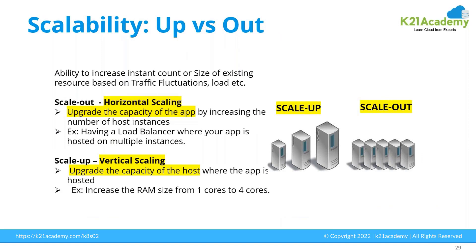In terms of scalability, there are two approaches: scale up and scale out. Scale out is also called horizontal scaling. Horizontal scaling means upgrading the capacity of the app by increasing the number of host instances. For example, if you are running your application on two containers and utilization reaches around 90%, you can add more containers to the existing application and horizontally scale by adding more pods or more VMs.